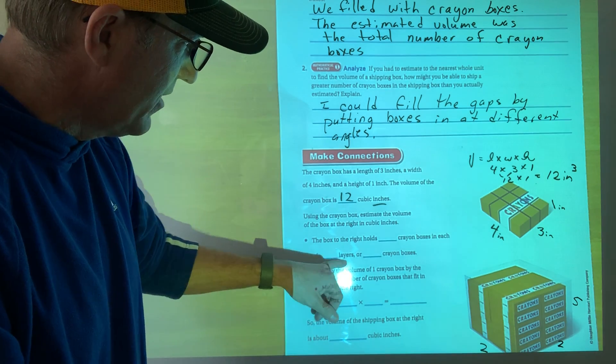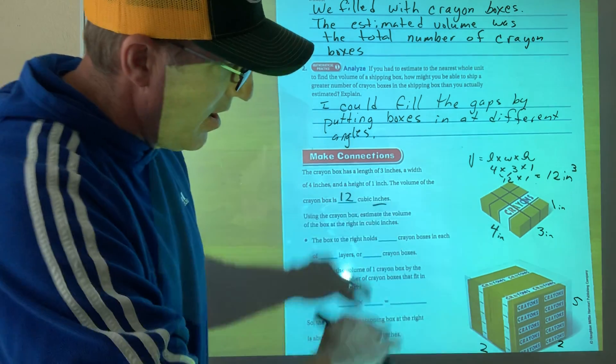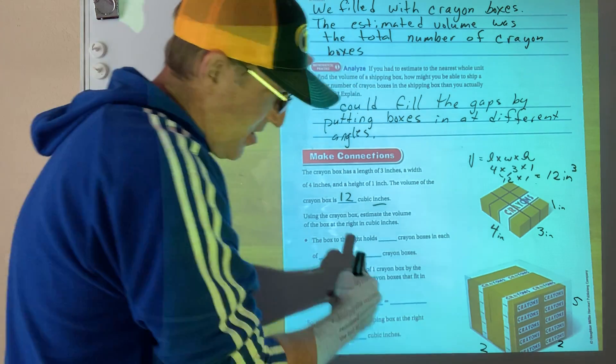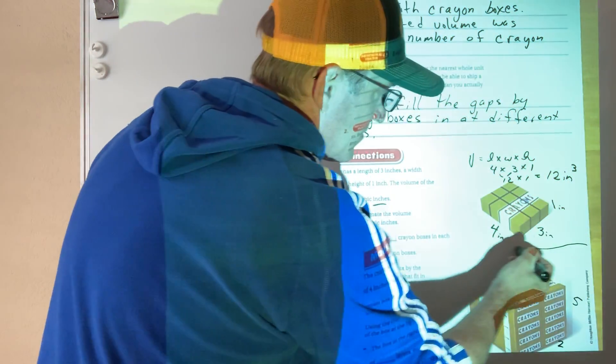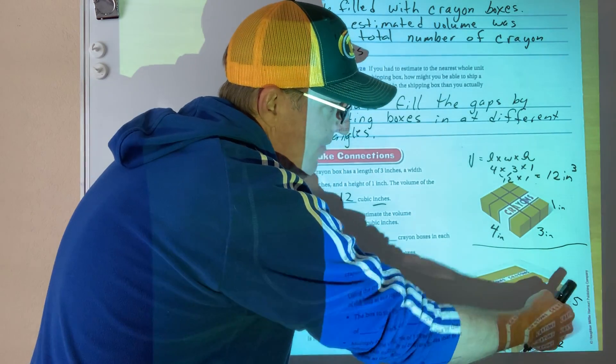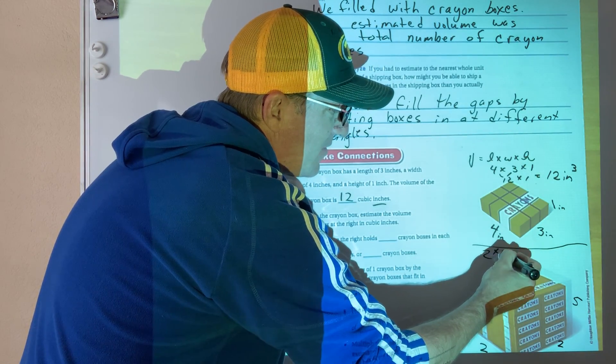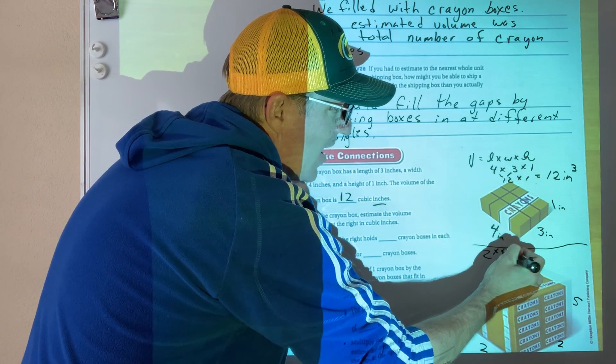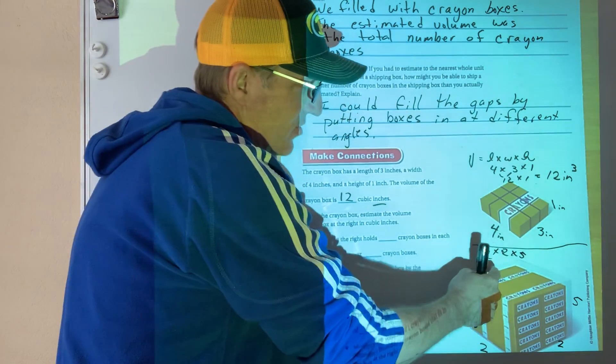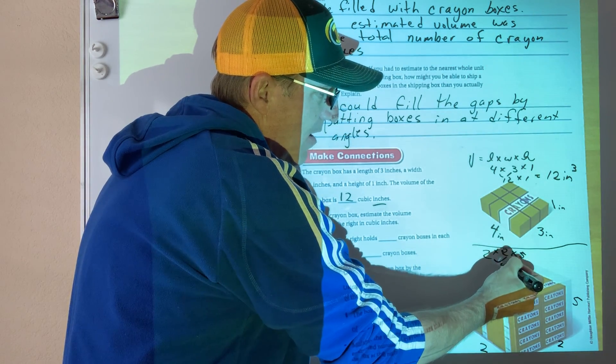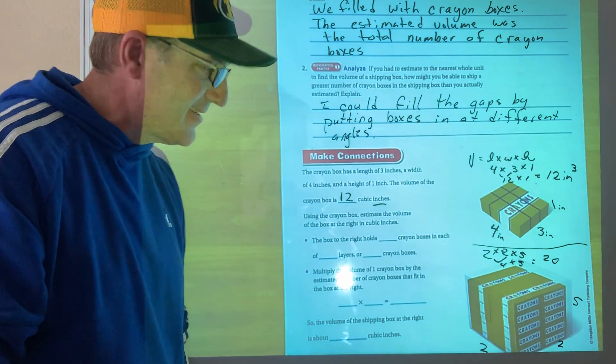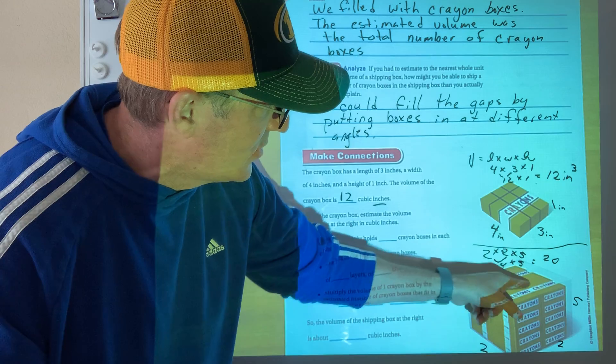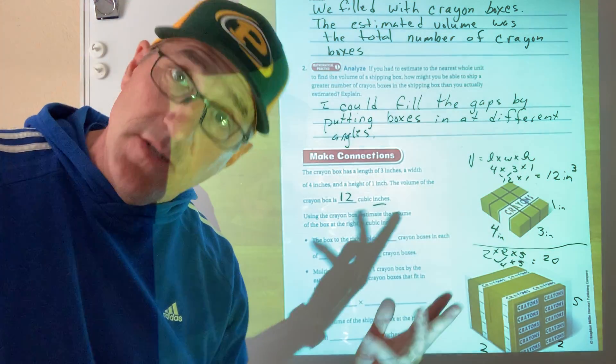So the box to the right holds cram boxes in each blank layers or this many cram boxes. So I've done a little thing down here. I'm going to, I'll fill this in, but you know me, I like to take a little shortcut here. I'm going to go two times two times five, two times two times five, which is two times two is four and four times five is 20. So I'm going to have 20 boxes. If you look at the layers, it's one, two, three, four. That's two times two. That makes sense.